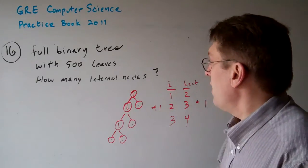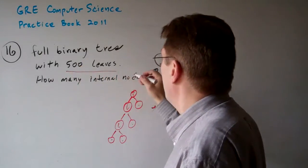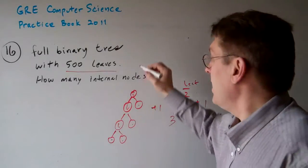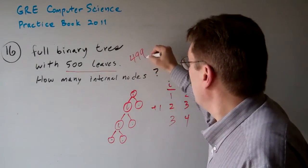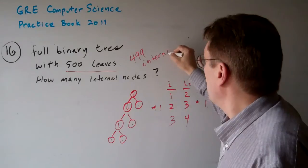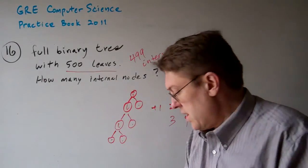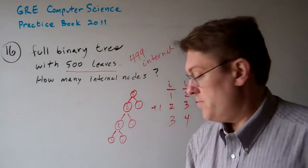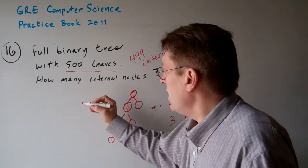So if we have 500 leaves, how many internal nodes do we have? 499 internal nodes. So the answer to question 16 is B, 499.